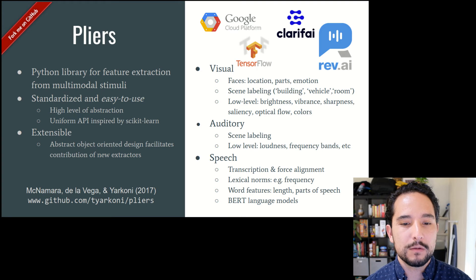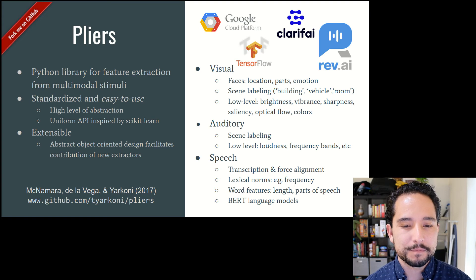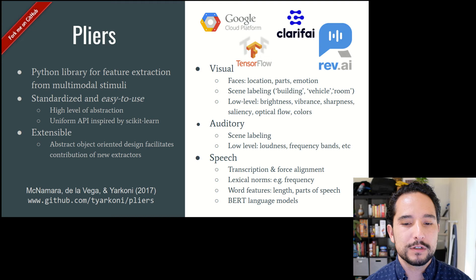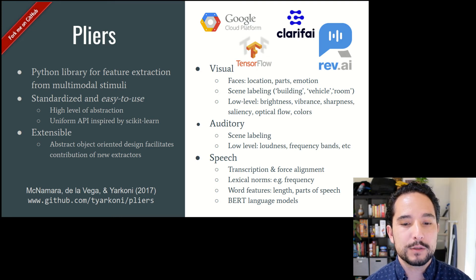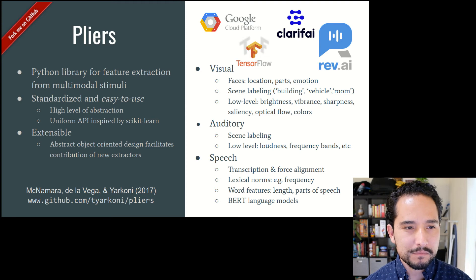In the speech domain, advances in speech-to-text allow us to fairly accurately and automatically transcribe speech in stimuli, with huge improvements seen every year. Once we have force-aligned transcripts with precise onset for every word, we can extract lexical norms such as word frequency, length, and part of speech, and pass them through advanced language processing models such as the family of BERT models, which have been making a lot of noise recently.